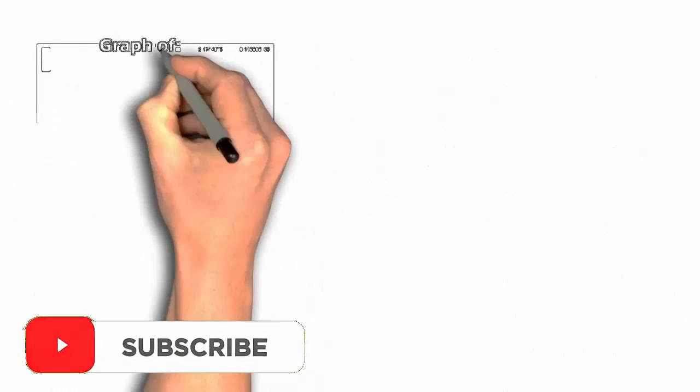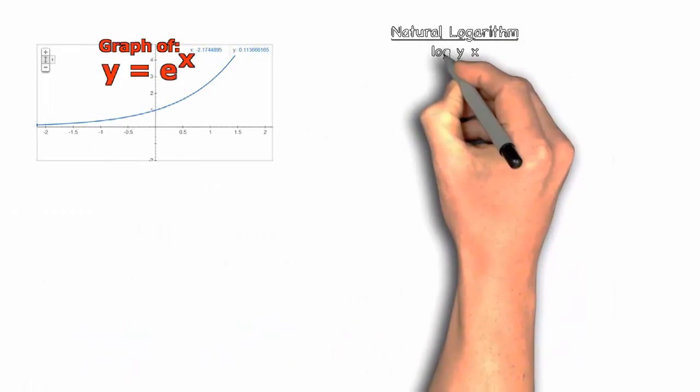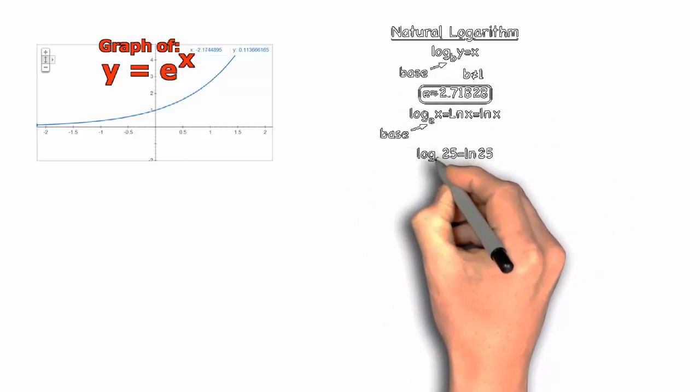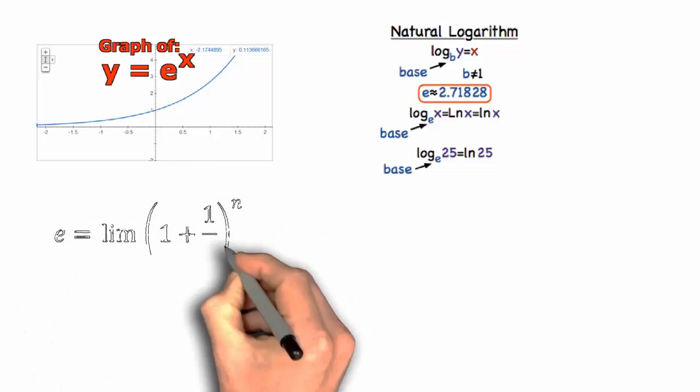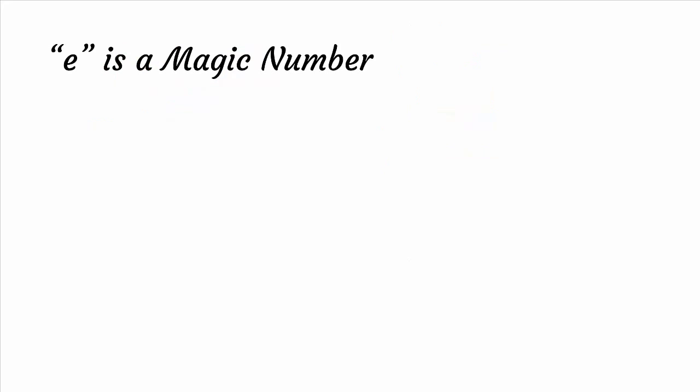Hello viewers, e is Euler's number. Most of us would have used it in mathematics, physics, and at several other places. We know its value, but several people do not know why e is such an important number and how it is obtained. This video will present the theoretical explanations of e. e is a magic number.